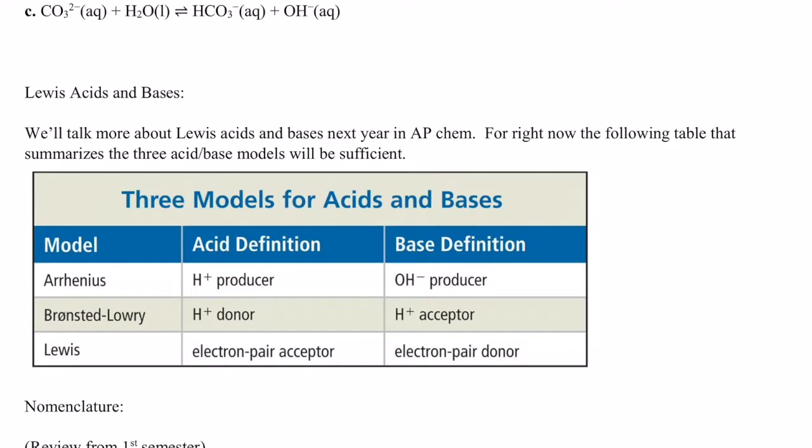Hey kiddos, welcome back. We're continuing our discussion on acids and bases. At the end of the last video, we had defined what Arrhenius acids and bases were and also Bronsted-Lowry acids and bases. We even talked about conjugate acids and bases. Now there's one more definition that I want to just briefly give to you this year. We'll worry about it more next year in AP Chem. But these are called Lewis acids and Lewis bases.